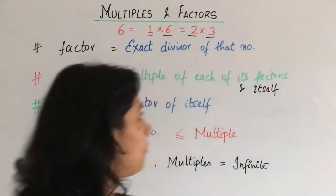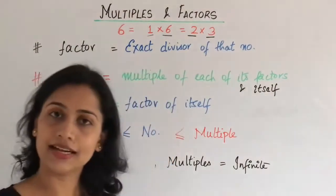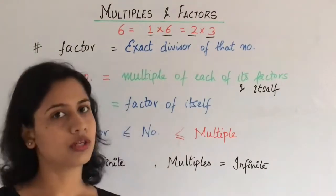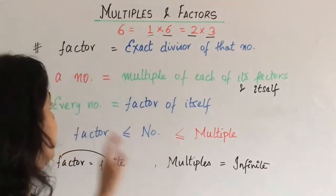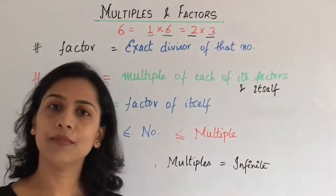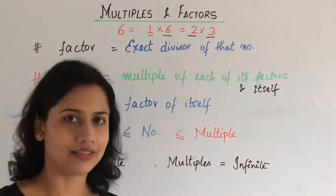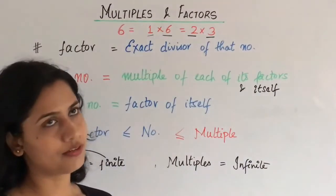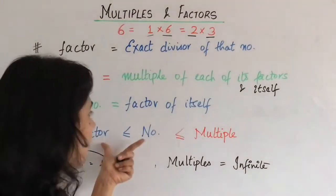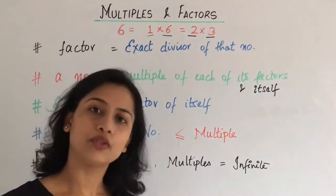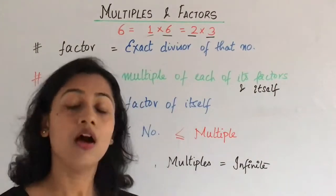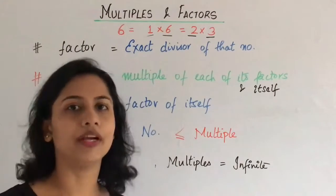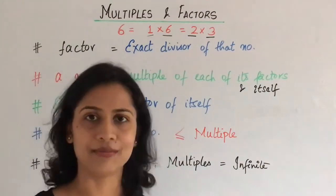What did we see? The property was the factor is an exact divisor of that number. So this is all we have for factors and multiples. See you in next lecture.